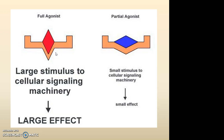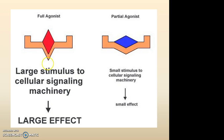Upon binding of a drug to a receptor, that drug may be an agonist or antagonist. As discussed in the previous presentation, an agonist may be a full agonist — that is a complete agonist — or a partial agonist. A complete agonist shows complete pharmacological activity as it has both affinity and intrinsic activity, whereas a partial agonist has affinity but not complete agonist activity, and thus shows only a small effect.